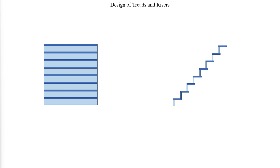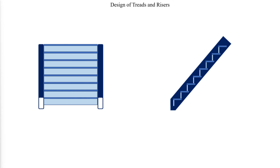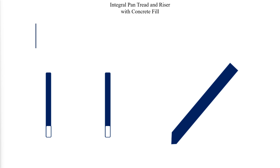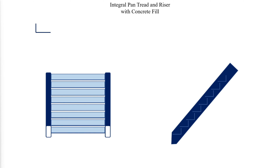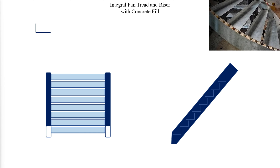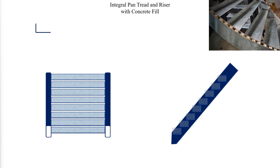Treads and risers are responsible for carrying gravity loads between the stringers. Light gauge steel can easily be bent and shaped to the required geometry for treads and risers, and can be directly welded to the stringers or supported on carrier angles. Concrete fill can then be poured into the formed pan tread; for design, the concrete is treated as a filler which increases self-weight but does not provide any additional strength. The tread and riser steel cross-section should be treated like a beam and evaluated using AISC Specifications Chapters F, G, and H.